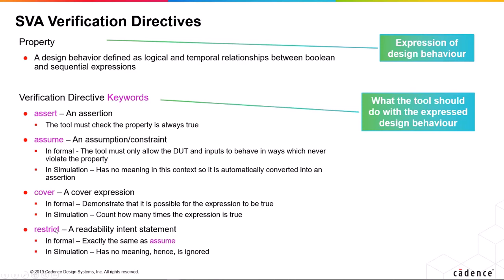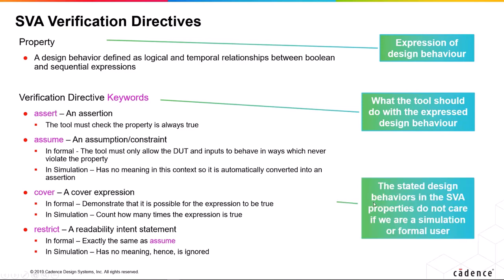Restrict is a readability statement which is rarely used. Its intent is good — the whole point of restrict is that sometimes in formal you want to apply an assumption which is only a temporary restriction, not actually required design behavior. So you use the word restrict instead of assume to indicate it is a temporary restriction. In formal it does exactly the same thing as assume. In simulation, because it's a different word, the simulator knows to ignore it and do nothing. The SVA itself contains nothing that tells us whether we're using simulation or formal — it's a statement of design behavior that should be true regardless of whatever tool we're executing our code in.